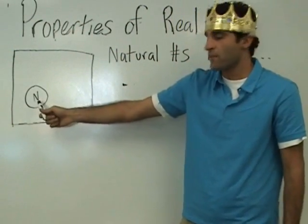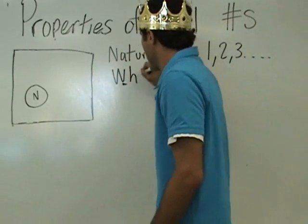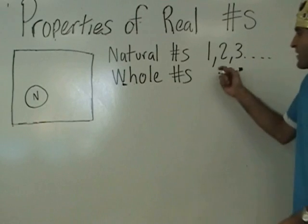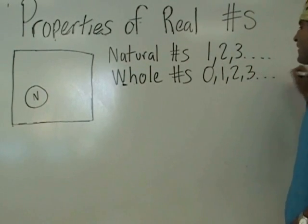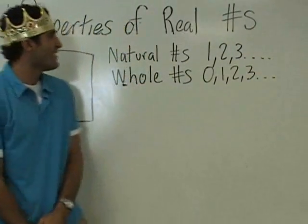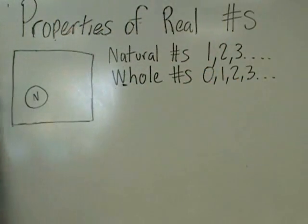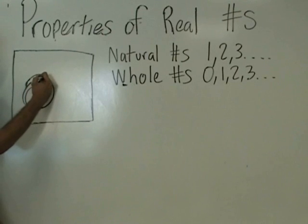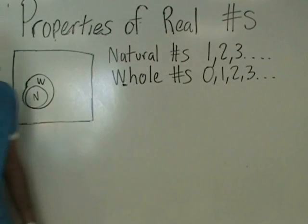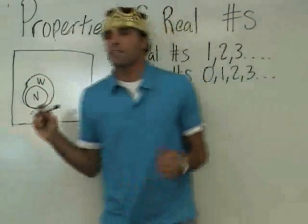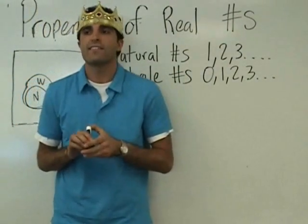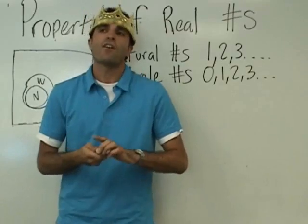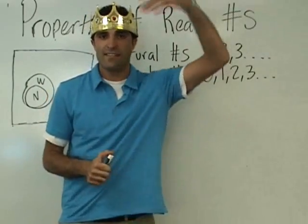In the world of numbers, this area represents natural numbers. The next type is called whole numbers. Whole numbers are just like natural numbers except they include zero — zero, one, two, three, and so on. If a number is natural, is it whole? Yes. Whole numbers are natural numbers plus zero.